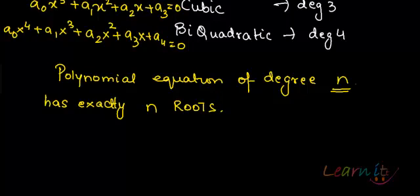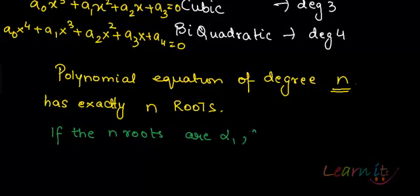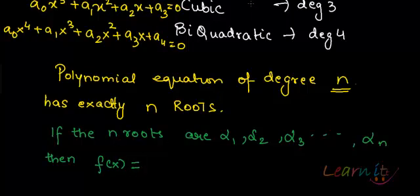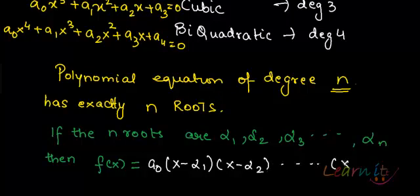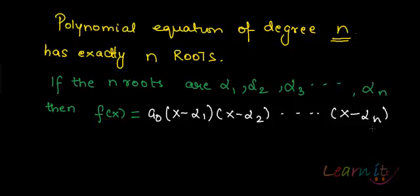What we mean by that is: if the n roots are α₁, α₂, α₃, and so on up to αₙ, then f(x) equals a₀ times (x minus α₁)(x minus α₂) and so on till (x minus αₙ). Essentially we can factorize this degree-n polynomial and get n factors.